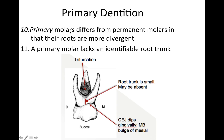Primary molars differ from permanent molars in that their roots are more divergent, and a primary molar lacks an identifiable root trunk. Here we've got highly divergent roots. The root trunk is that portion of the tooth from the CEJ down to the furcation — it might be small or absent. In primary teeth, this root trunk is going to be much smaller than in the permanent dentition.